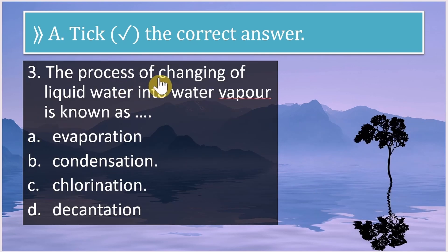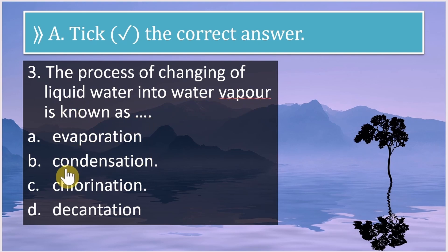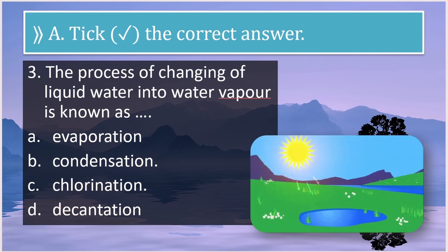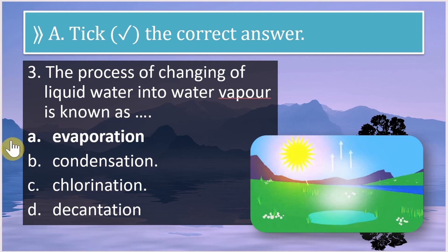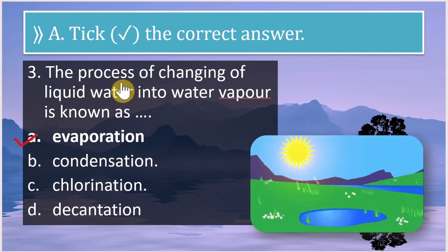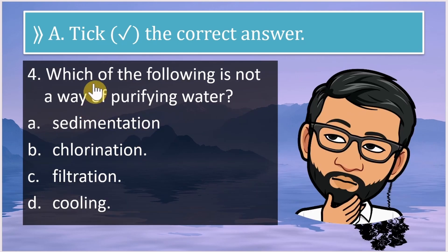The process of changing liquid water into water vapor is known as — evaporation, condensation, chlorination, or decantation? The correct answer is evaporation. The process of changing liquid water into water vapor is known as evaporation.